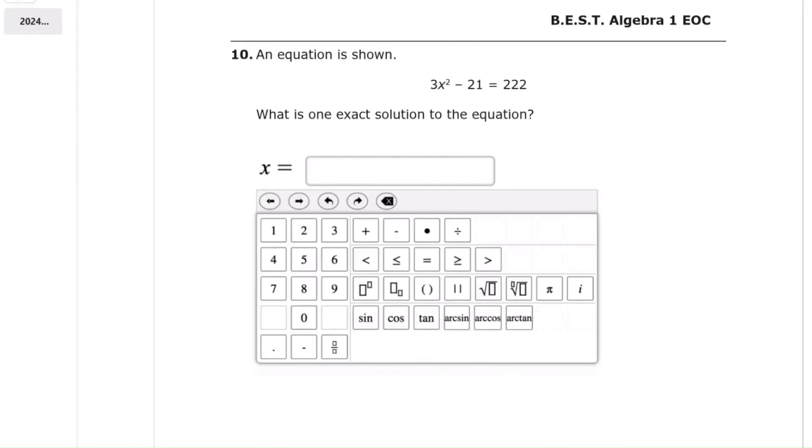Question 10, we are solving the equation 3x squared minus 21 equals 222. Step 1, add 21 to both sides.